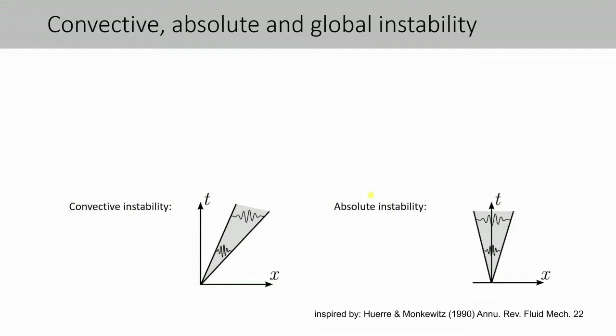Linear stability theory tells us if a flow is stable or unstable. It does, however, not tell us if the disturbance can grow at one station or if it needs to be convected downstream in order to grow.